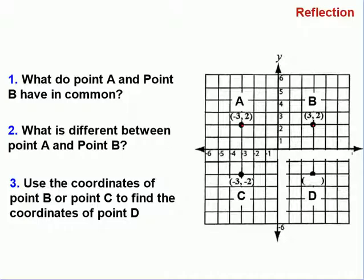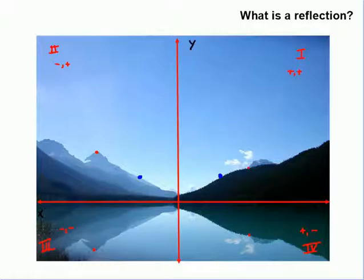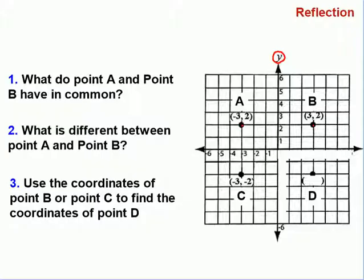That makes a lot of sense because they are reflected over the y-axis. Here is my y-axis, and I have reflected them just like in my picture with the mountain — from here to here. So the only thing that is changing is my x-coordinate. What is different between point A and point B is the x-coordinate: negative three over here and positive three over here. Now, when we reflect A over the x-axis, the y-coordinates are different but the x-coordinates are the same. So when you flip across the y-axis, the x-coordinates change; when you flip across the x-axis, the y-coordinates change.